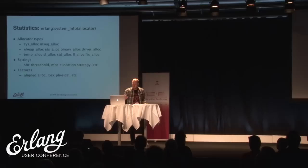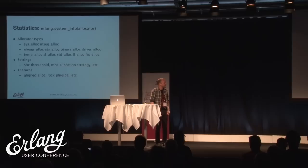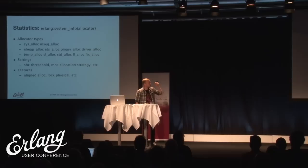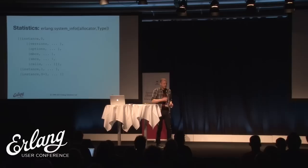Looking at statistics: there are lots of statistics available from the runtime system via erlang:system_info(allocator). Calling it with just 'allocator' gives a list of all enabled allocator types and their settings. If you go deeper by specifying a type - such as mseg_alloc, binary_alloc, or ets_alloc - you get detailed per-instance statistics, where instance zero is the locked instance, instance one is scheduler one, instance two is scheduler two, and so on.